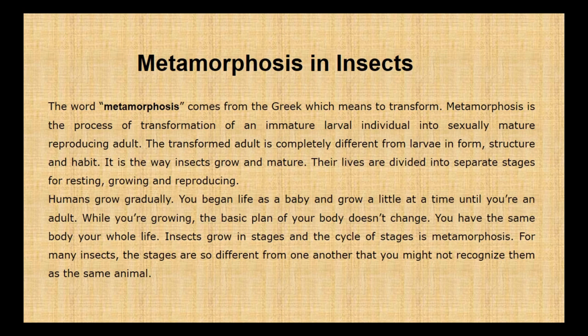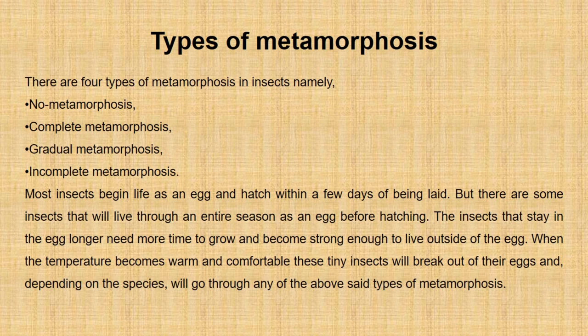There are four types of metamorphosis in insects: no metamorphosis, complete metamorphosis, gradual metamorphosis, and incomplete metamorphosis. Most insects begin life as an egg and hatch within a few days of being laid, but some insects will live through an entire season as an egg before hatching. Those that stay in the egg longer need more time to grow and become strong enough to live outside. When the temperature becomes warm and comfortable, these tiny insects break out of their eggs and, depending on the species, go through one of these types of metamorphosis.